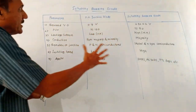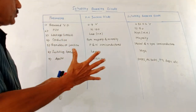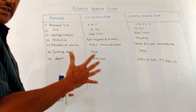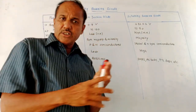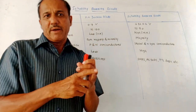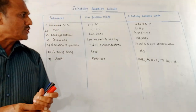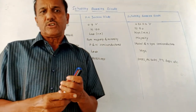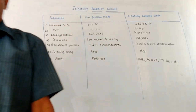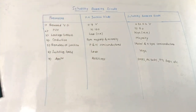So this is about the comparative chart of the PN Junction Diode and Schottky Barrier Diode. Dear students, that's it for today's session. Thank you, and thanks a lot for watching this video.